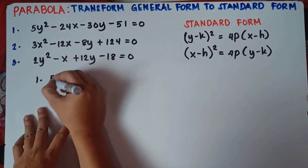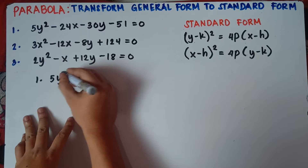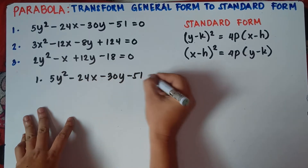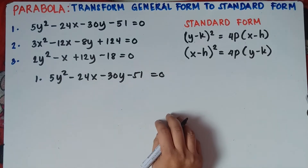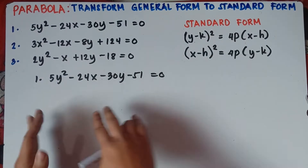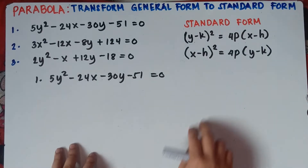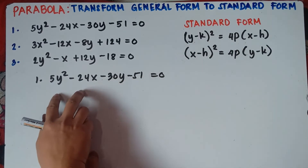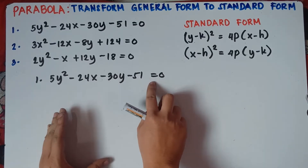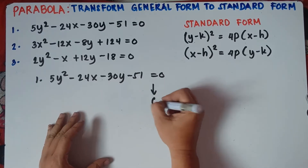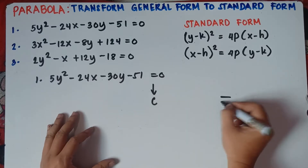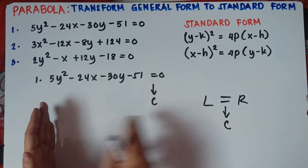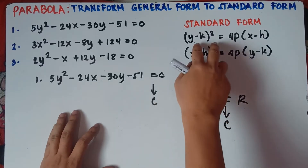Let me copy the equation: 5y squared minus 24x minus 30y minus 51 equals 0. The first thing to do is separate the y variables from the x variables. Since we have y squared, we follow the y-squared equation and put the y terms on the left side of the equal sign.